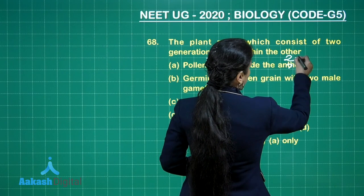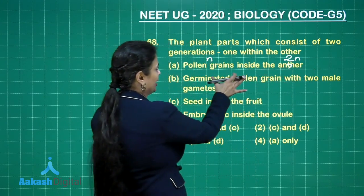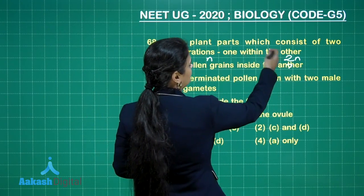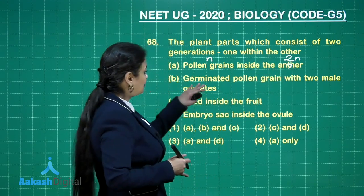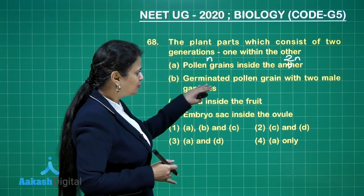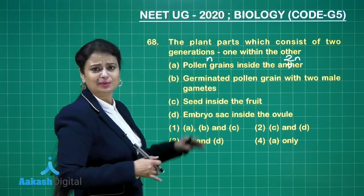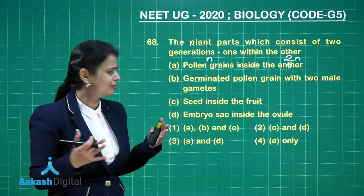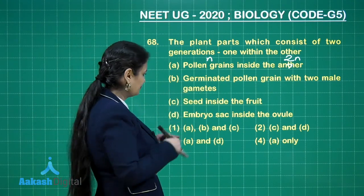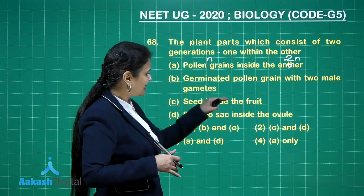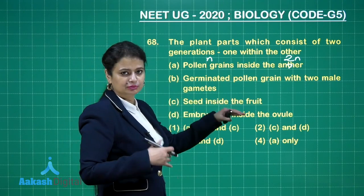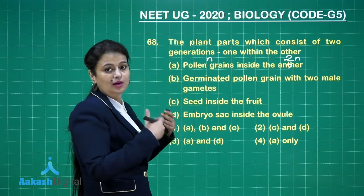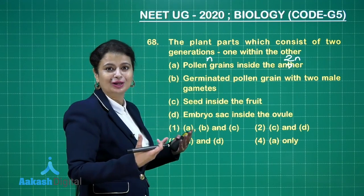Germinated pollen grains with two male gametes — this is entirely gametophytic, haploid generation, so this option is out of the scenario. Seed inside the fruit: the fruit is diploid, and the seed inside will also majorly have diploid tissue, so this is also out of the scenario.